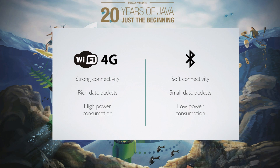Comparing these connectivity types, you can see two groups. On one hand, Wi-Fi, 4G, and 3G offer strong connectivity with direct internet access and rich data packages like videos and photos — but at the cost of high power consumption. On the other hand, Bluetooth offers low power consumption with small data packages, but is only short-range. For the full IoT era, neither is ideal on its own — we need a combination.